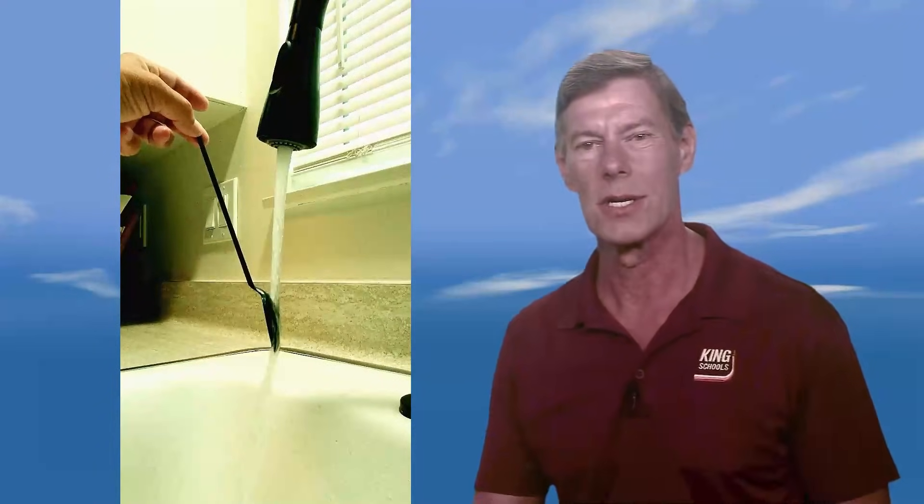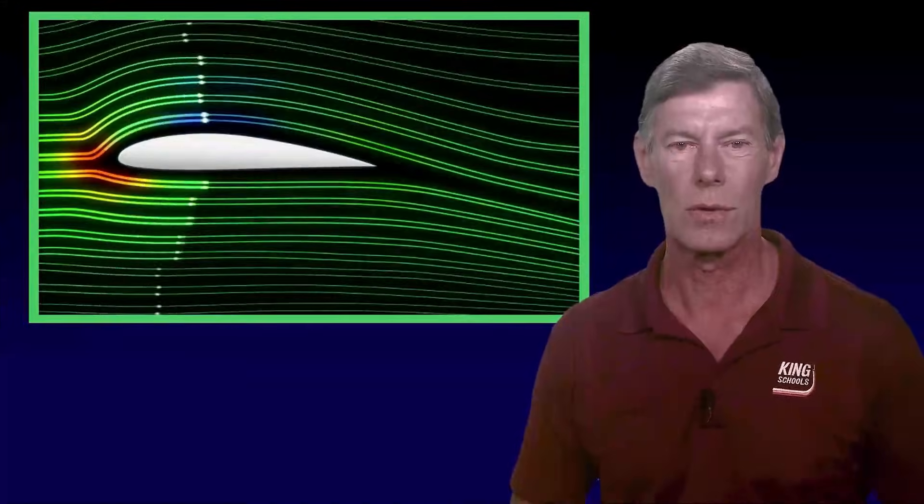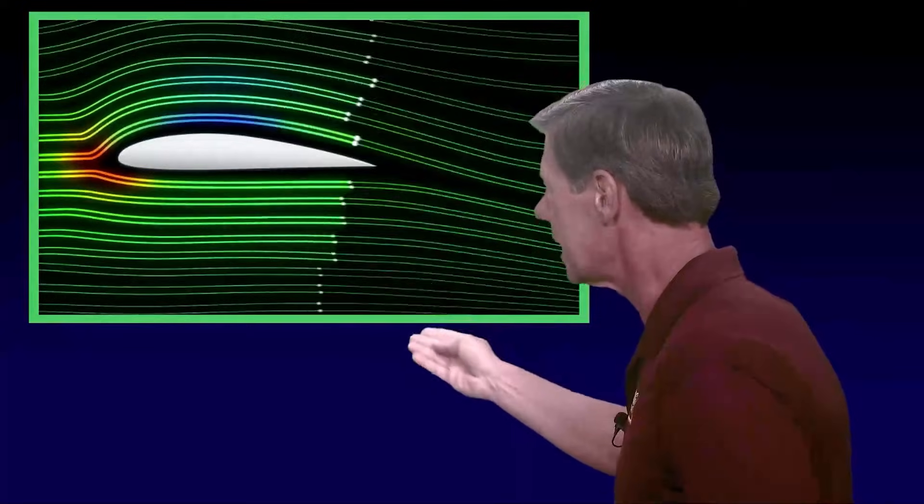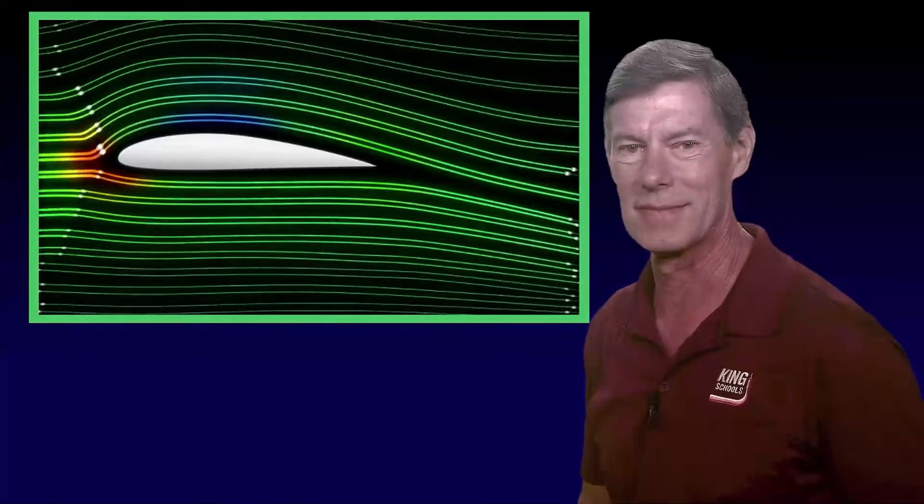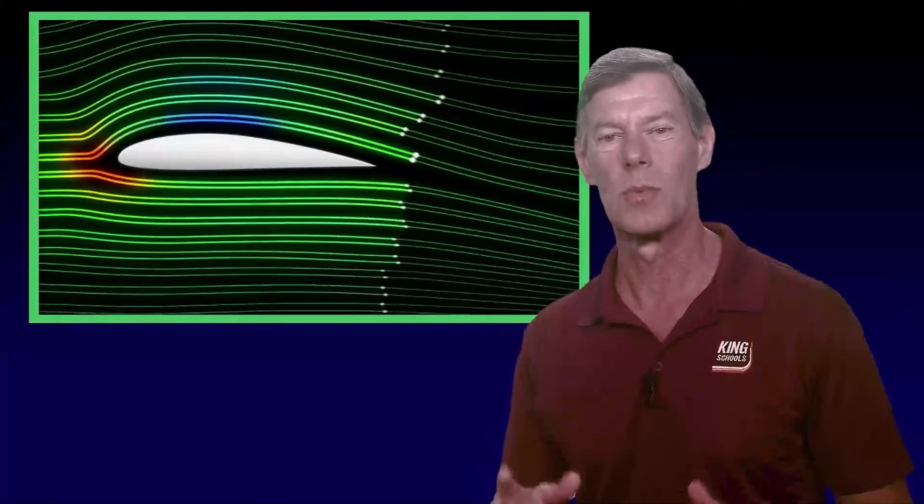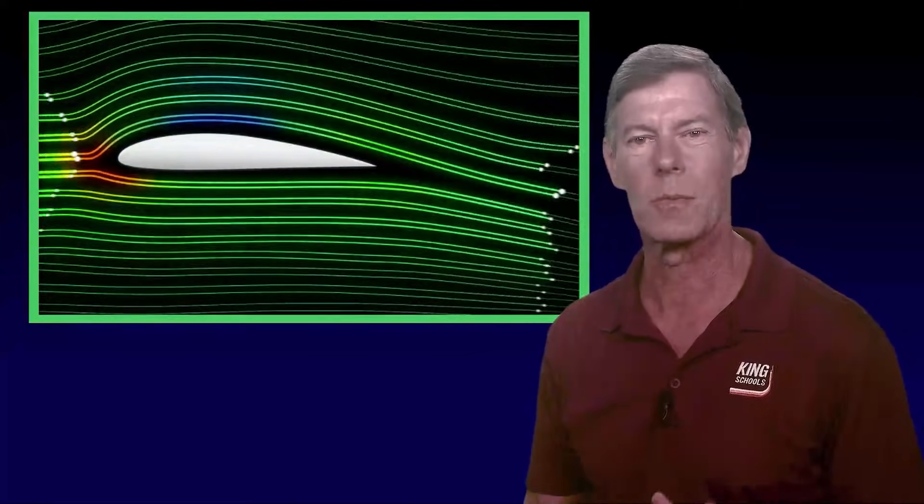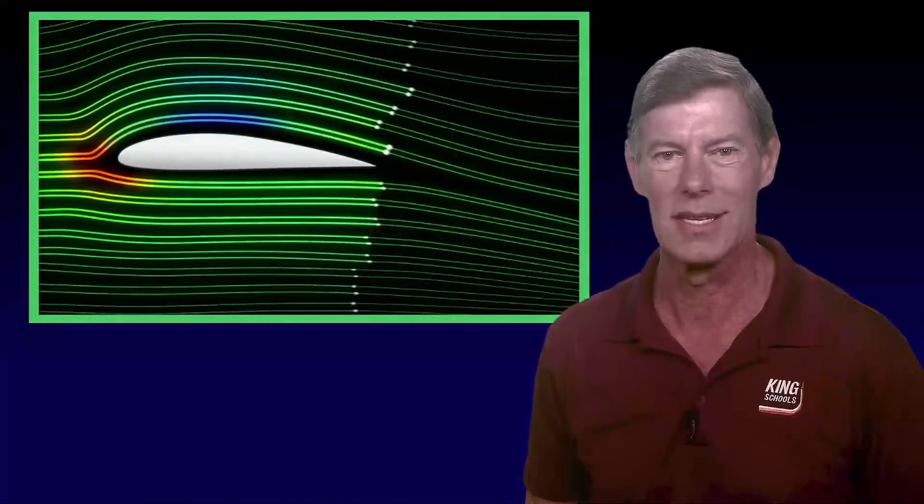Now imagine if this were air flowing over a wing. You can see that the air would be redirected downward, setting the stage for lift. Now we're going to talk about this more in just a minute. But before we do that, let's talk about pressure and its effect on lift.